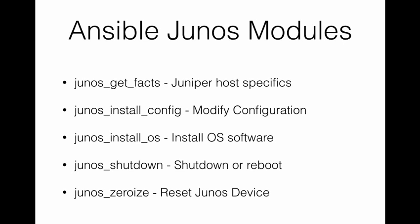Here's a quick overview of the Ansible Junos modules. You can call junos_get_facts, which gives you the operating version, model, serial number, and other Juniper-specific facts. There's junos_install_config — that's what we'll be doing today in the demo — to deploy configurations. You can also install an OS to a device, though there are some caveats for virtual chassis setups. And there's junos_shutdown and junos_zeroize, so you can reboot or wipe the box completely clean.